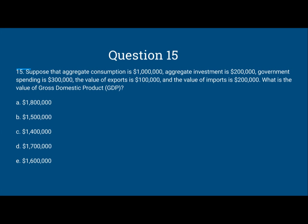What is the value of the gross domestic product, GDP? A: $1,800,000. B: $1,500,000. C: $1,400,000. D: $1,700,000. Or E: $1,600,000.